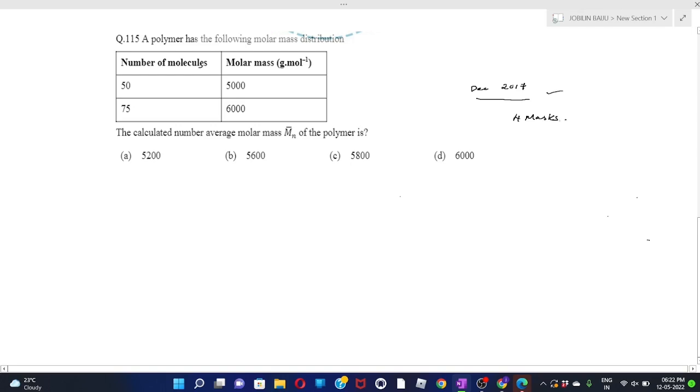Now we can talk about this question. The question says that a polymer has the following molar mass distribution to calculate the average molar mass of the polymer. MN is given by Sigma NI MI upon Sigma NI. This is the formula for the number average molar mass.